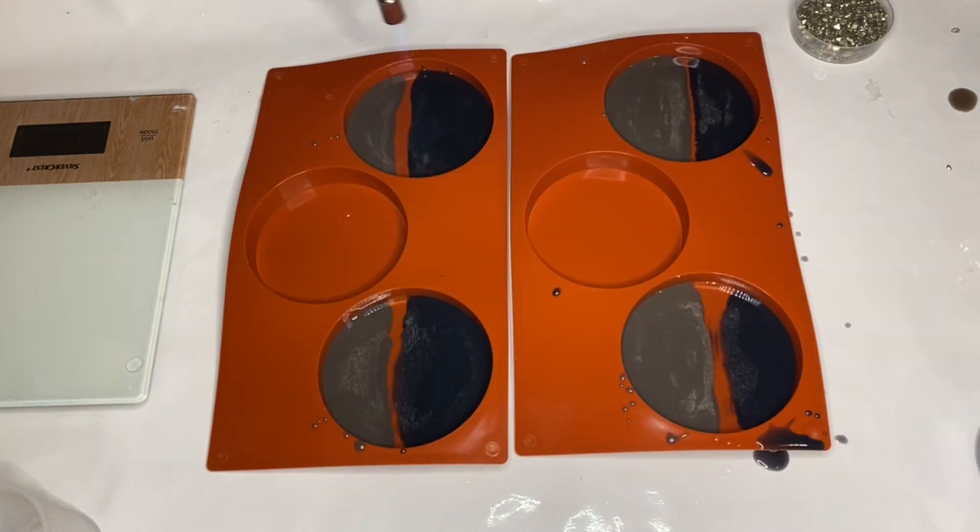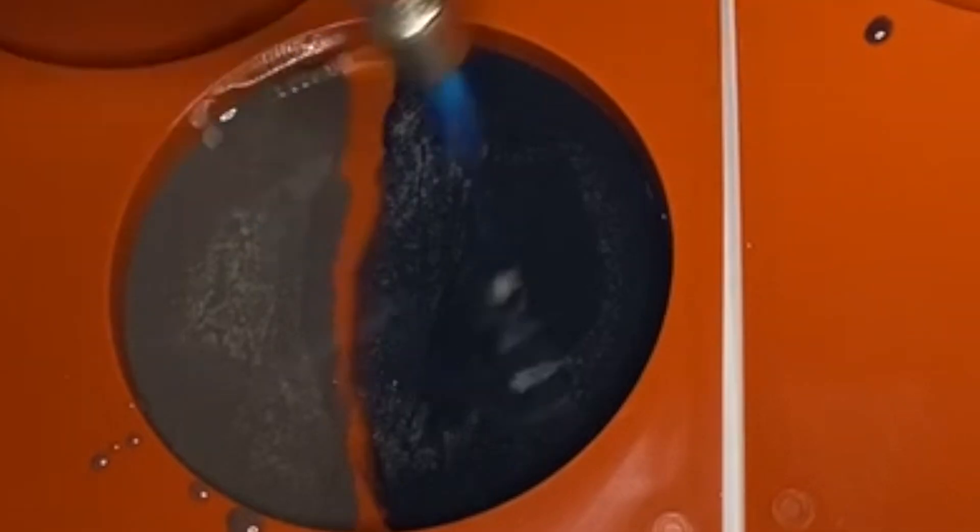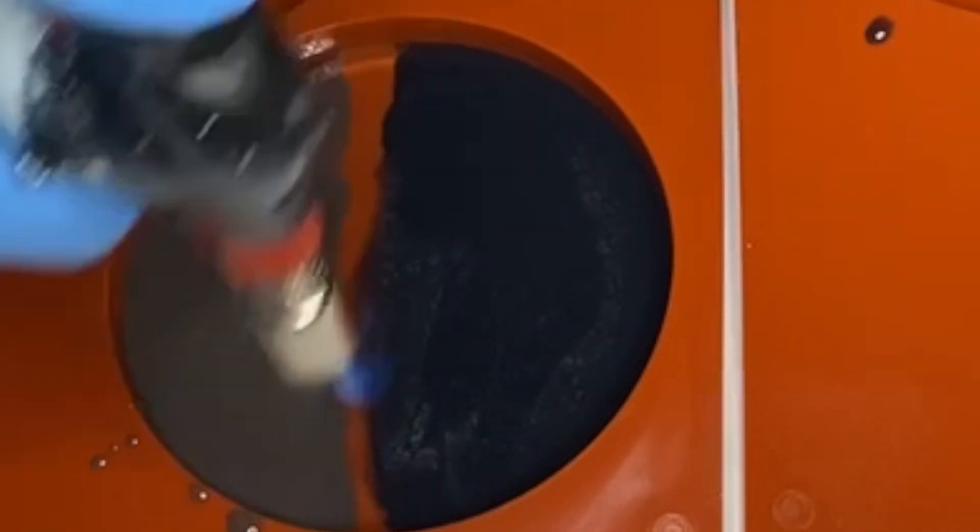And this part is pretty cool because the pigments are dark, you're actually able to see the bubbles on camera. Usually you can't really see them, so this is my mom popping the bubbles with a torch gun.